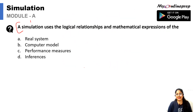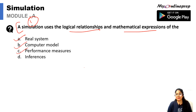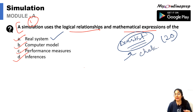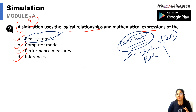First question: simulation uses the logical relationship and mathematical expression of the real system, of a computer model, performance measures, or inferences. Simulation is something that takes into account a real system — for example, a dentist. That is why option A is the correct answer.